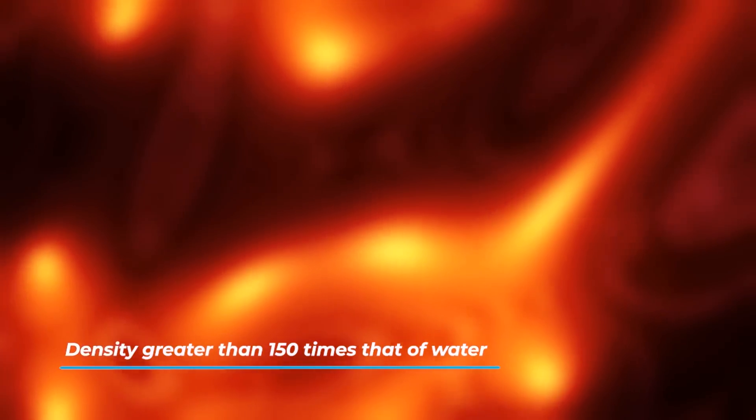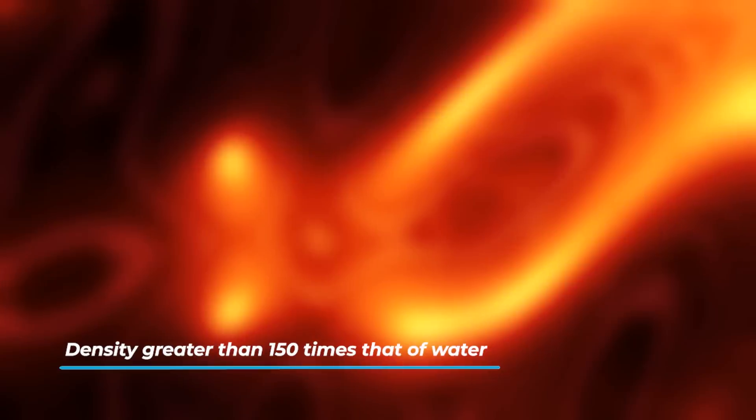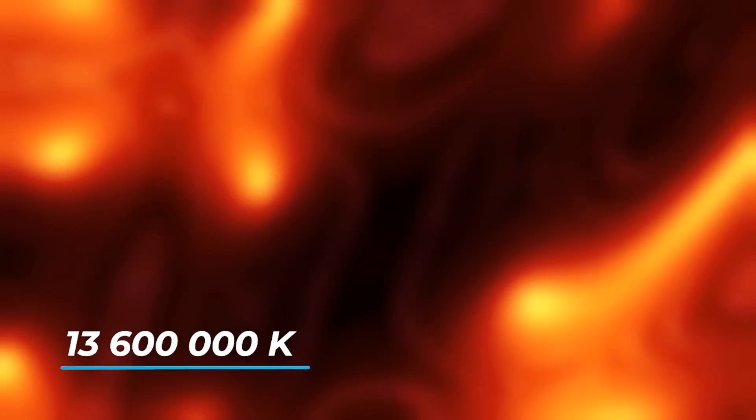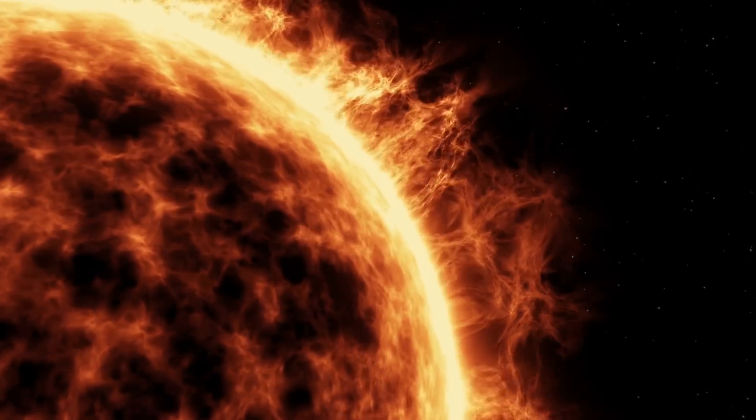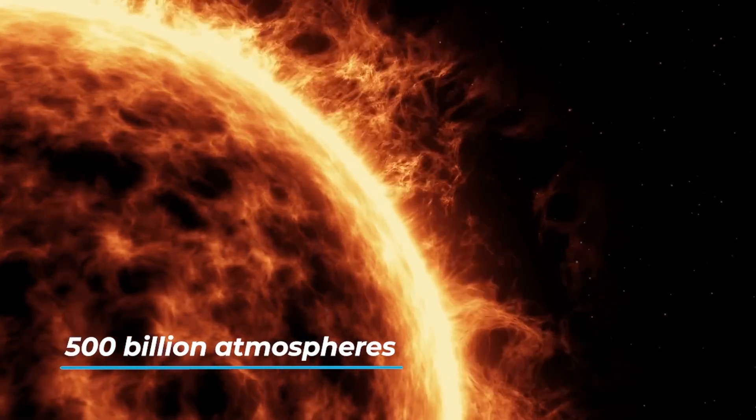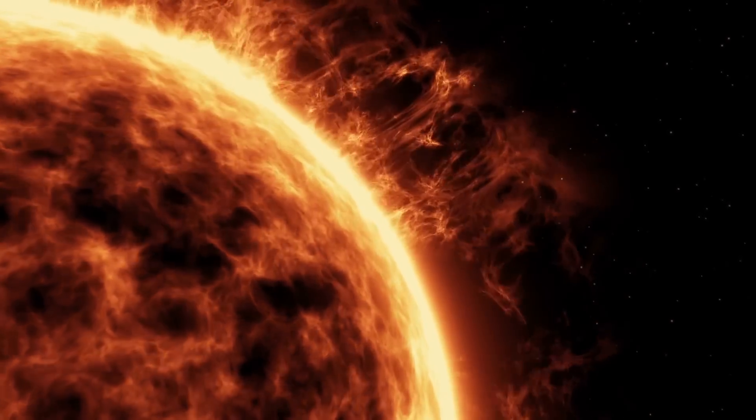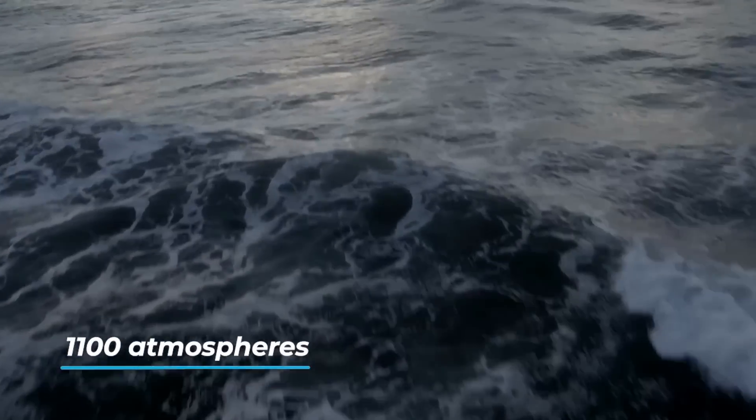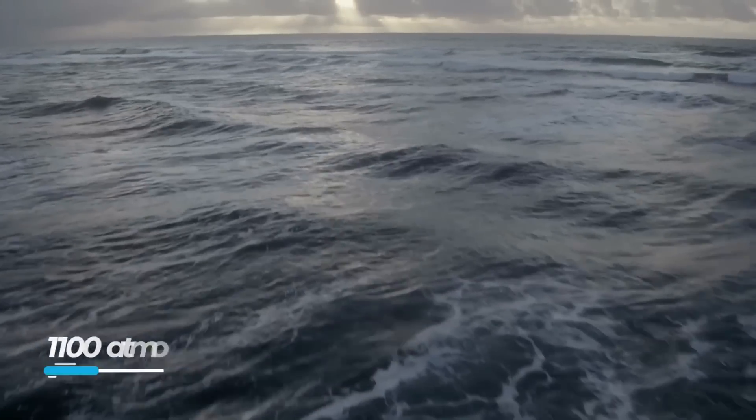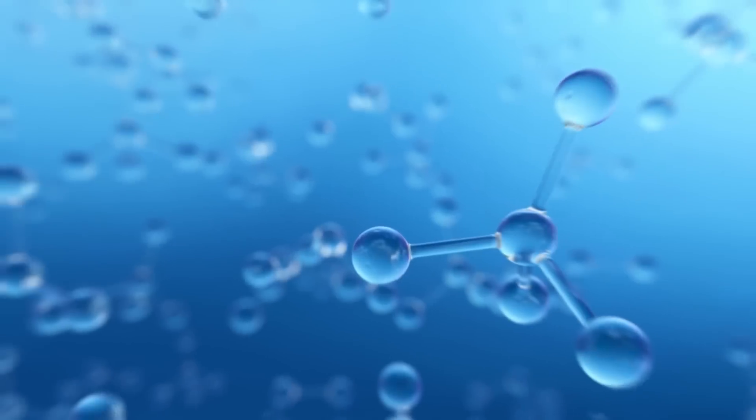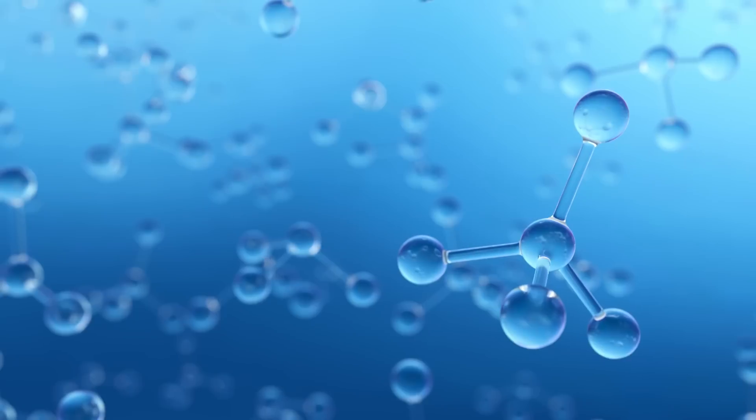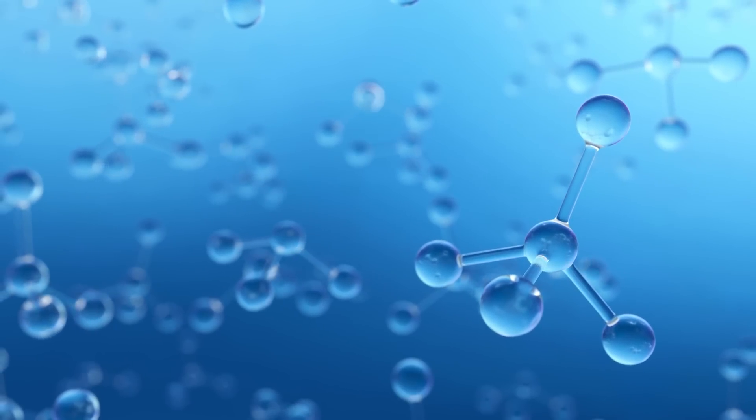Astrophysicists believe that the solar nucleus has a density greater than 150 times that of water, a temperature of about 13.6 million Kelvin, and a pressure of almost 500 billion atmospheres. To give an idea of the immense pressure, just think that at the deepest point of the Earth's ocean, the pressure is only a little less than 1,100 atmospheres. Here, inside the nuclear furnace, hydrogen nuclei burn and fuse, producing mainly helium nuclei and heavier elements.